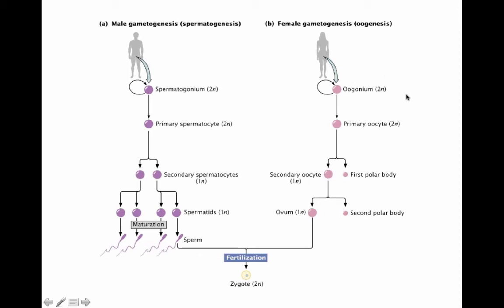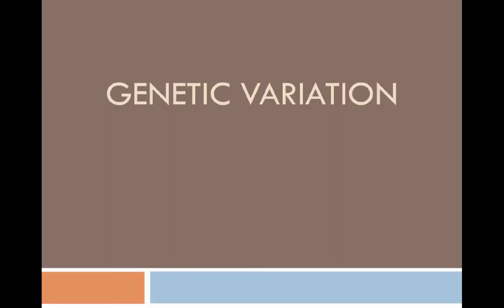On the female side, females have oocytes that begin as oogonia, which are diploid. They mature into primary oocytes, still diploid, and then that primary oocyte matures and divides into one secondary oocyte containing one copy of the DNA and a polar body. The secondary oocyte further matures into an ovum still containing one copy of the DNA, and a second polar body is produced. Before fertilization we have a haploid sperm and a haploid ovum; when fertilization takes place both copies come together as a zygote, completing meiosis.